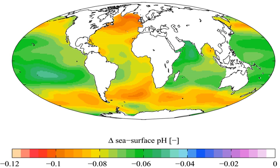In seawater, a natural horizontal boundary is formed as a result of temperature, pressure, and depth, and is known as the saturation horizon. Above this saturation horizon, Ω has a value greater than 1, and calcium carbonate does not readily dissolve. Most calcifying organisms live in such waters. Below this depth, Ω has a value less than 1, and calcium carbonate will dissolve. However, if its production rate is high enough to offset dissolution, calcium carbonate can still occur where Ω is less than 1.